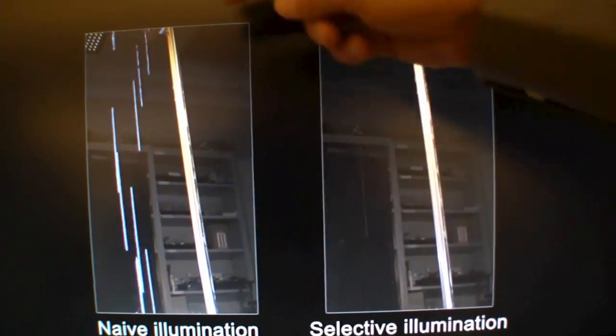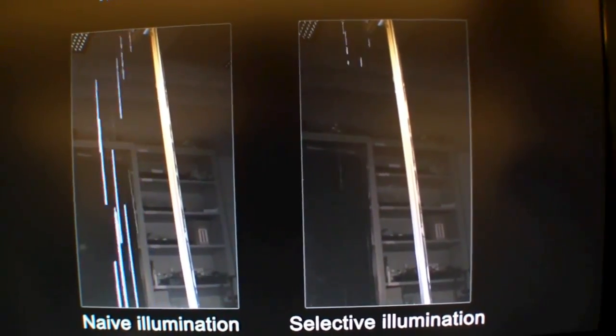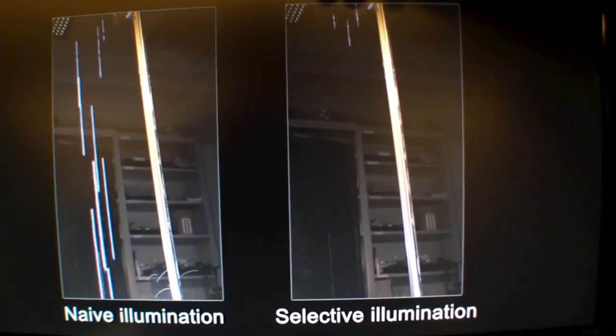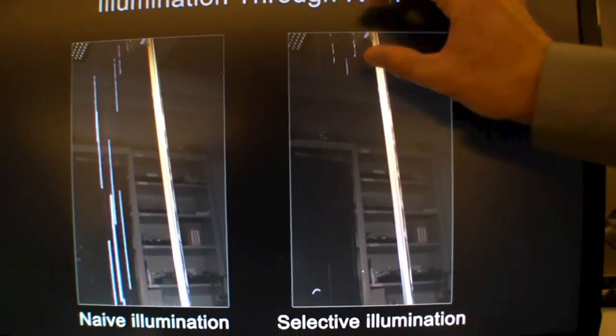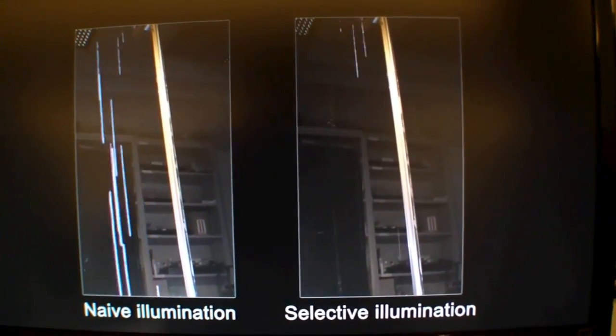In this video you're seeing the system where you have 100% illumination here so you see those long streaks. Then with the system turned on, you can still see the bookshelf behind. But as we analyze where that rainfall is coming, it'll calculate that and begin to turn off those light sources that would otherwise hit the raindrops.